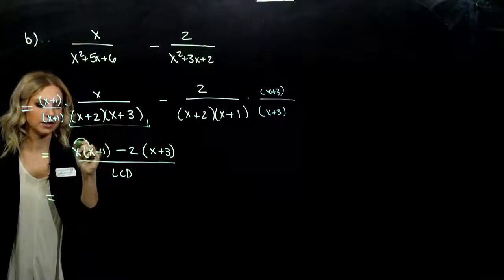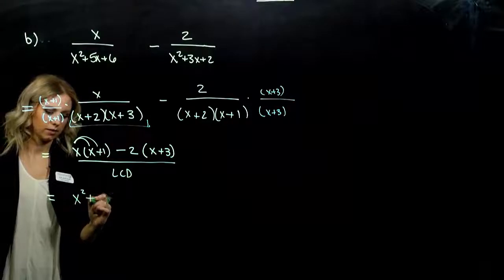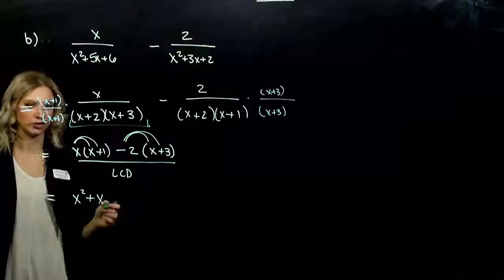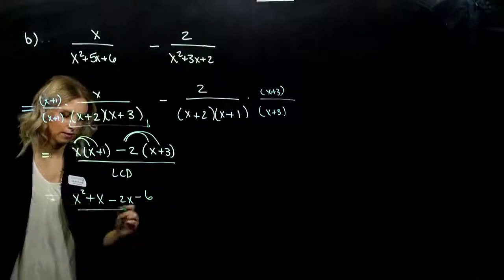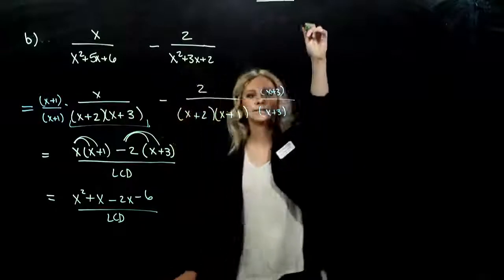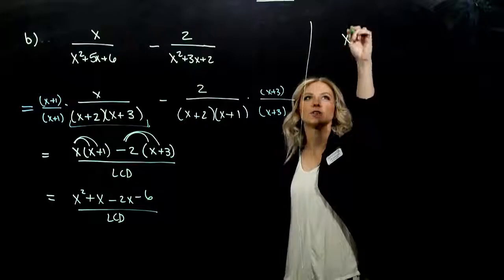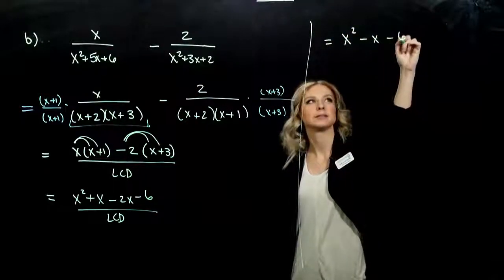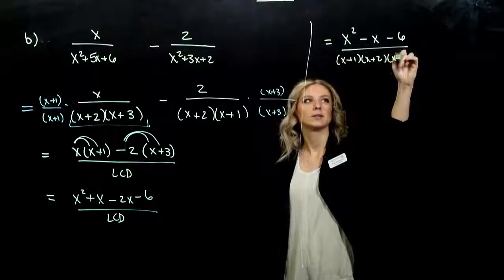Getting rid of the parentheses, let's distribute. What are we looking at from that first term? x squared plus x. And we have to distribute negative 2 to each of those terms to get rid of the parentheses — so we've got minus 2x and minus 6, all over our LCD. Combining like terms, I've got one factor of x squared, negative 1 factor of x, and minus 6, all over x plus 1 times x plus 2 times x plus 3.